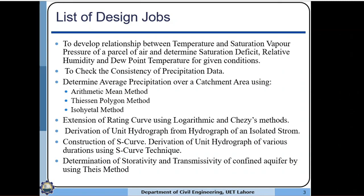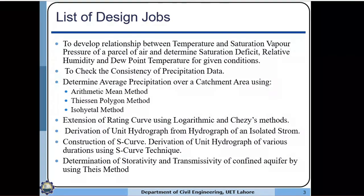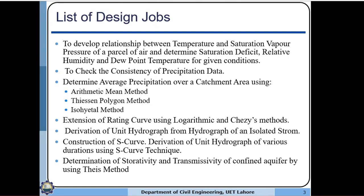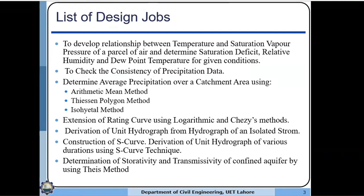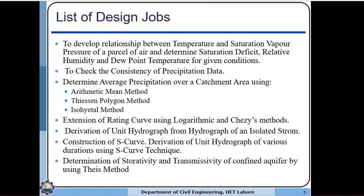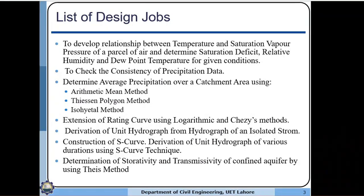The second design job is to check the consistency of precipitation data. You will be given precipitation data from certain stations and asked to check the accuracy of the data at a certain station using a specific technique at a rain gauging station. If there is inconsistency or inaccuracy, you will identify it and then correct it to produce consistent precipitation data.